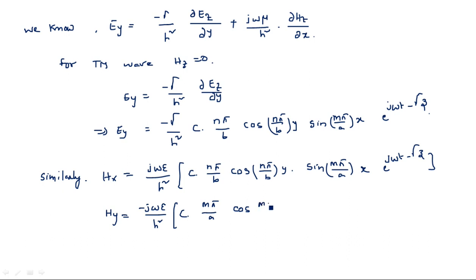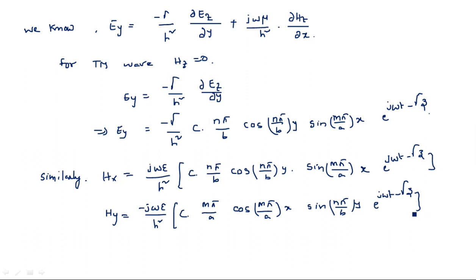The Hx equation gives: Hx = (some constant) · cos(mπ/a · x) · sin(nπ/b · y) · e^(jωt − γz). These are the four equations: Ex, Ey, Hx, and Hy.